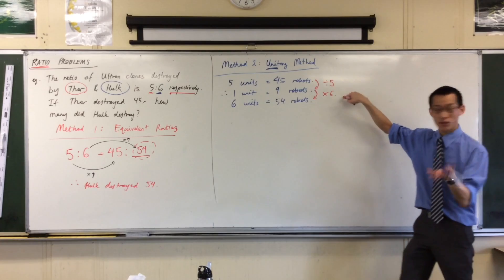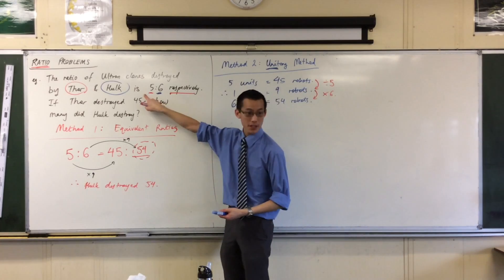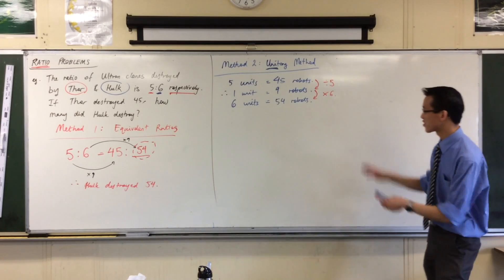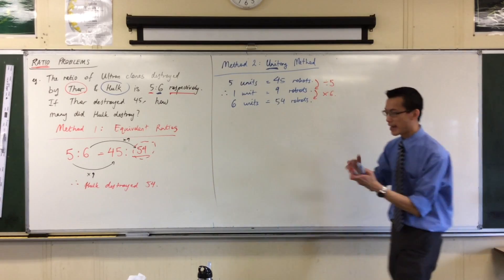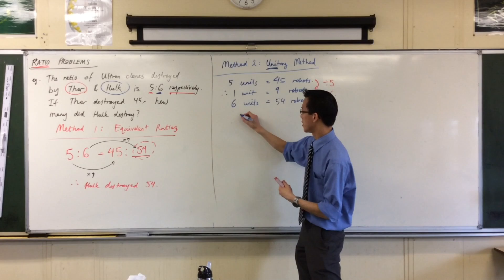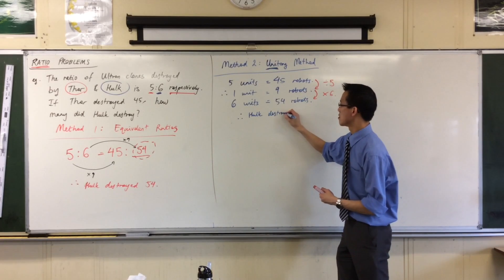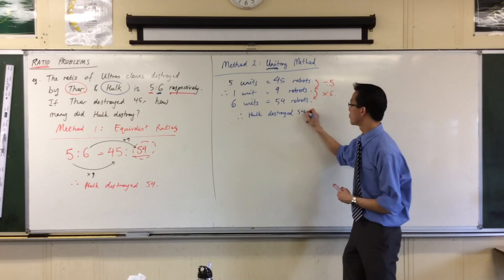By the way, this five and this six, you can see, they correspond exactly to this five and this six. So you can see the same numbers appearing, just in a slightly different arrangement. Again, let's just conclude. Therefore, Hulk destroyed 54.